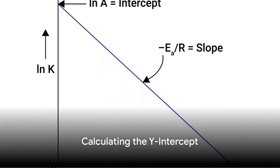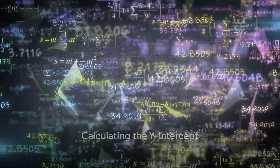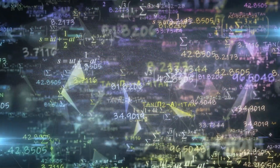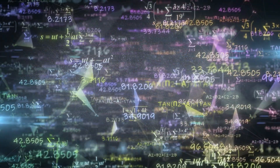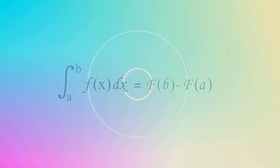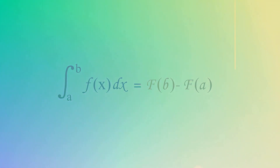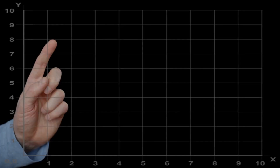Finally, we calculate the y-intercept — the point where the line crosses the y-axis when the independent variable is zero. We do this by subtracting the product of the slope and the mean of the independent variable from the mean of the dependent variable.